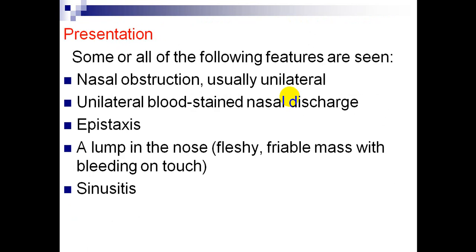Clinical presentation of sinonasal tumors. Some or all of the following features are seen: unilateral nasal obstruction, unilateral blood-stained discharge, nasal discharge, epistaxis in advanced cancers, a lump in the nose — fleshy, friable mass with bleeding on touch — and some sinonasal tumors present with features of sinusitis.